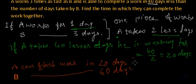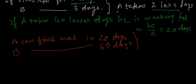So to complete that work individually, A is taking 20 days and B is taking 60 days. And now we have to find how much time will they take if they work together. From here we can say that in one day, A will finish 1/20th of the work.